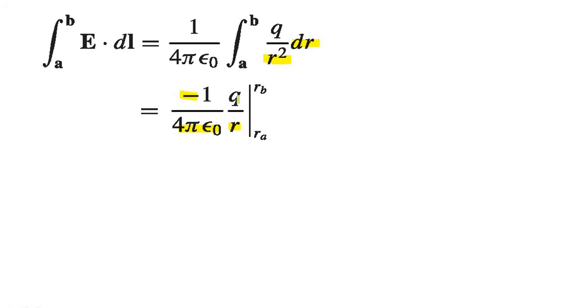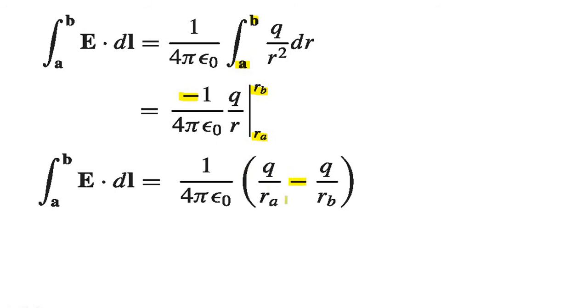Minus 1 by R, remaining Q is there, and we need to apply the limit A to B which is Ra to Rb. So minus Q by Rb minus Q by Ra.